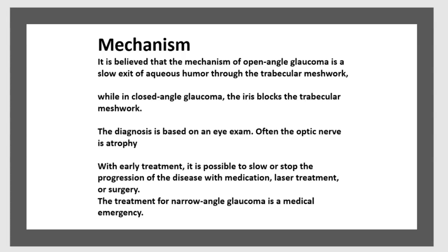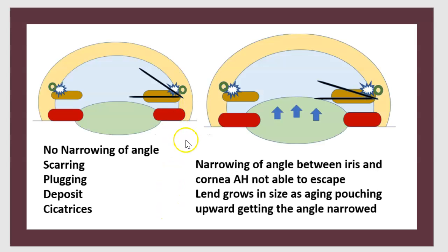The diagnosis is based on an eye exam. Often the optic nerve is atrophic. With early treatment, it is possible to slow or stop the progression of the disease with medication, laser treatment, or surgery. The treatment for acute narrow-angle glaucoma is a medical emergency.